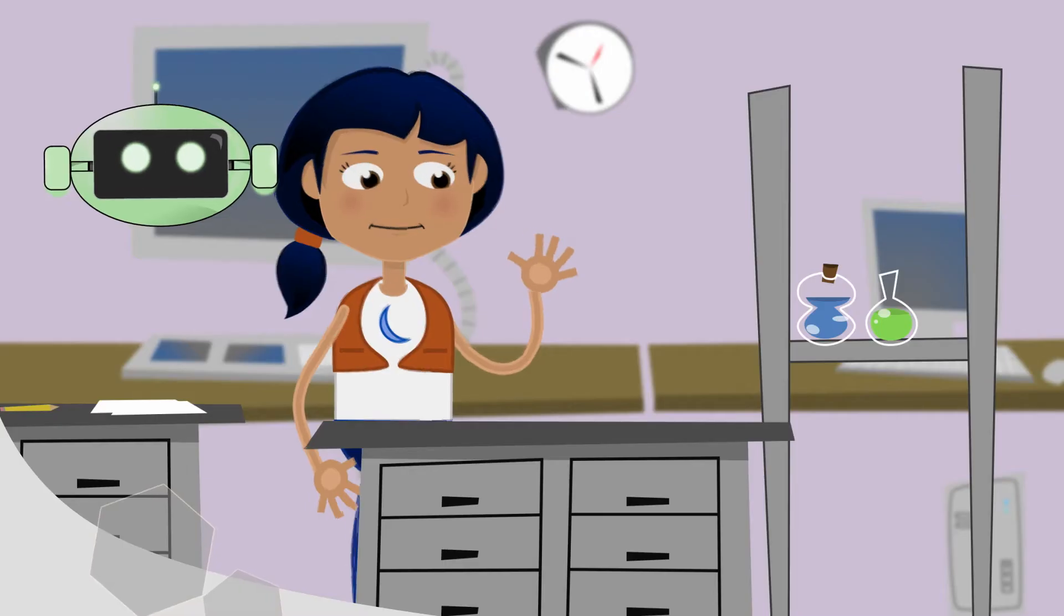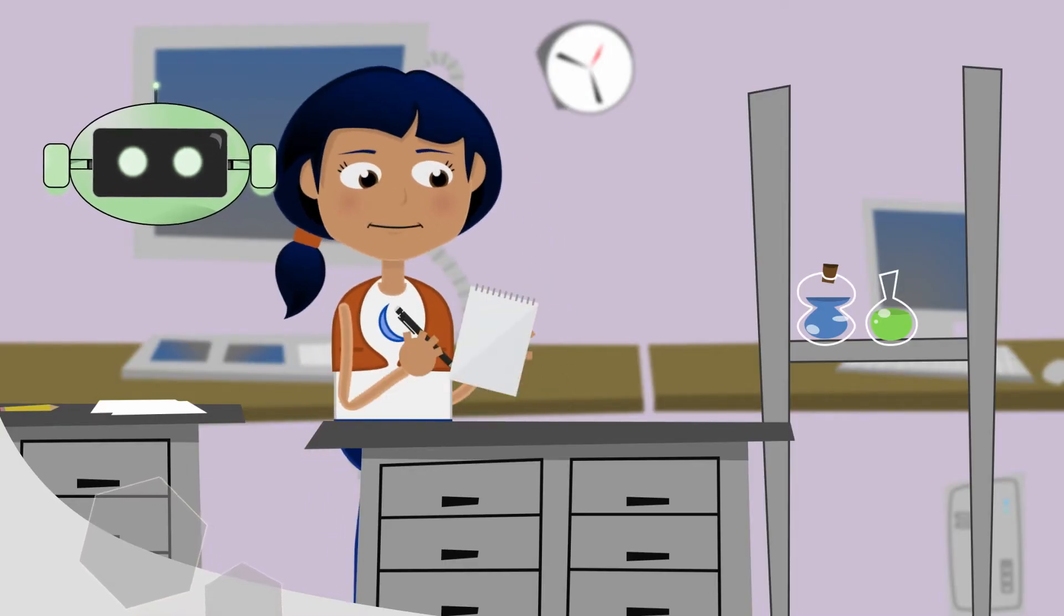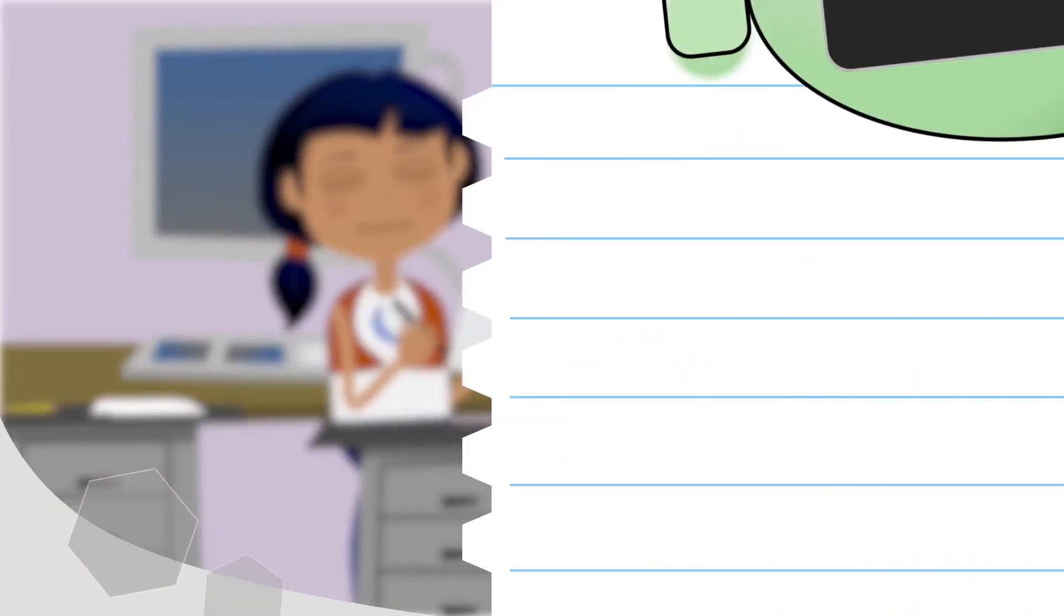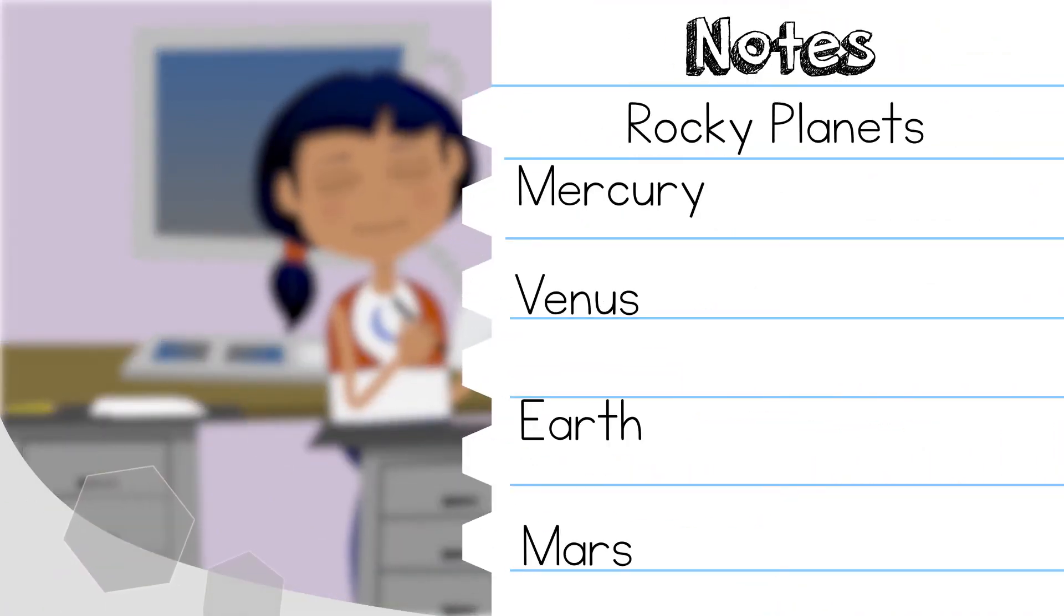Now, pause and take notes on the four rocky planets. Mercury, Venus, Earth, and Mars. Press play again when you're ready.